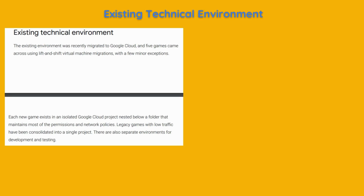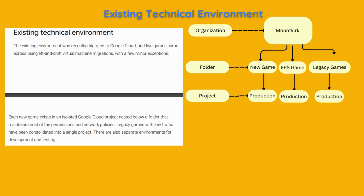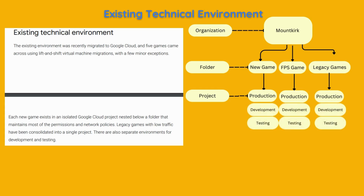Let's look into the IAM hierarchy in more detail. We have an organisation called Mountkirk. Each new game exists in an isolated Google Cloud project nested below a folder. Legacy games with low traffic have been consolidated into a single project. There are also separate environments for development and testing. Understanding IAM hierarchy is very important — you can also double-check Google's Skill Boost courses if you have any doubts.